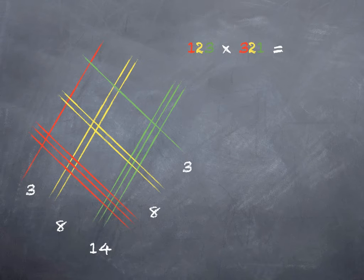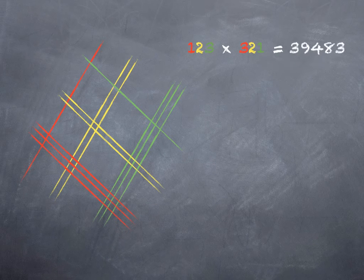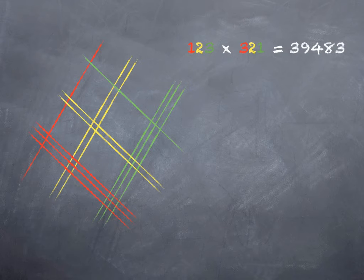Now, just like in regular multiplication, that's a problem. I can't have fourteen in the hundreds place. So that really is one thousand and four hundred. So I take that one and I bump it over to the thousands place. And I wind up with thirty-nine thousand, four hundred and eighty-three, which happens to be the correct answer.